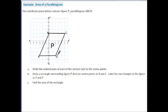So we're first asked to write the ordered pairs of each of these vertices. Let's go through and label. First, we find A is at the coordinate point negative 3, negative 4. B is at the coordinate point 0, 2.